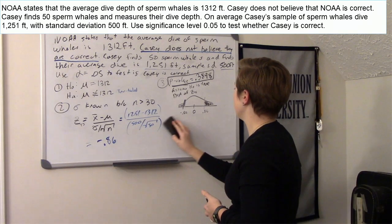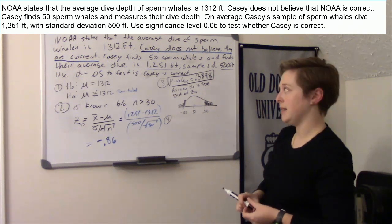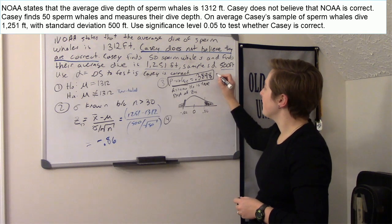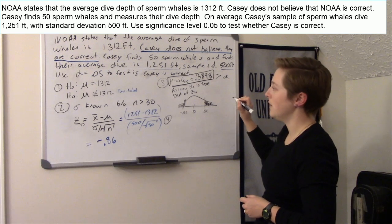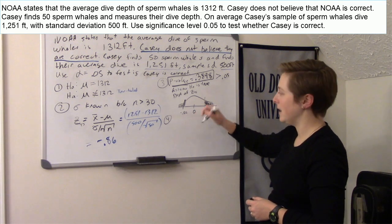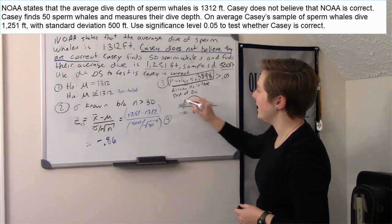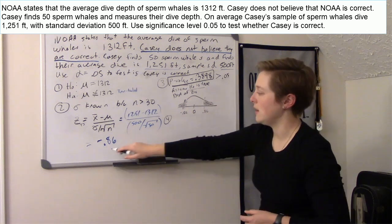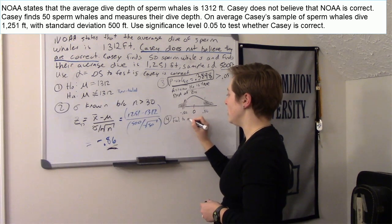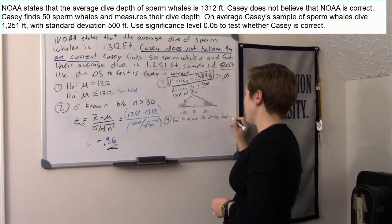Step four: state your conclusion. It's either reject or fail to reject the null hypothesis at significance level 0.05. The p-value of 0.3898 is greater than alpha of 0.05, meaning this outcome is really likely if the null is true — the area is really big. So we fail to reject H0 at significance level 0.05.